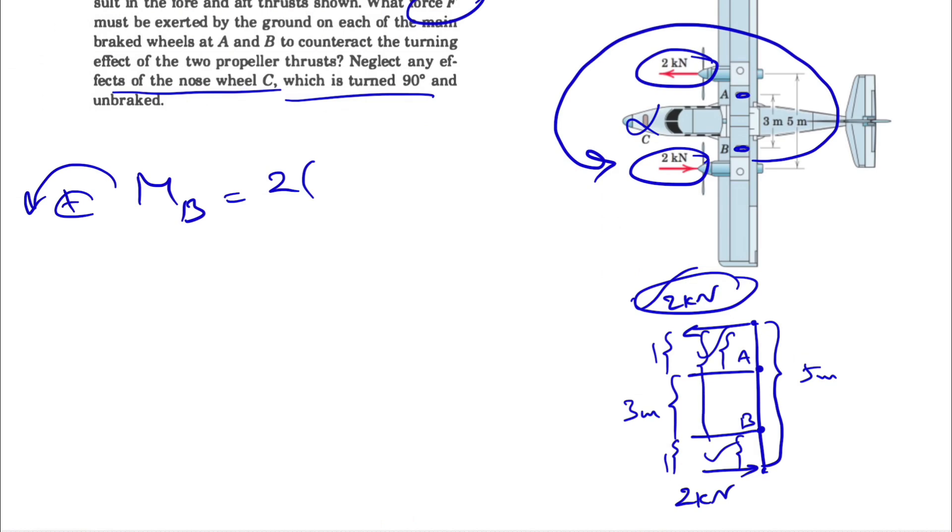Also we have the moment of 2 kilonewton at the bottom. That one's also counterclockwise, so 2 times the distance to B, which is 1. In order to have these two equal to zero, we have to have a clockwise moment, so we need a negative sign that shows the force that is applying at point A is to the right in order to make a clockwise moment about point B and to cancel out the moments that we are getting from the other two forces.